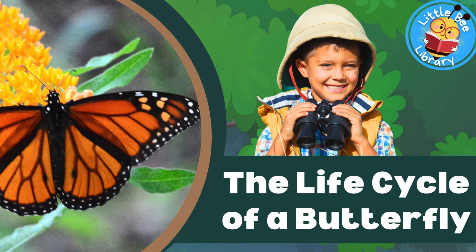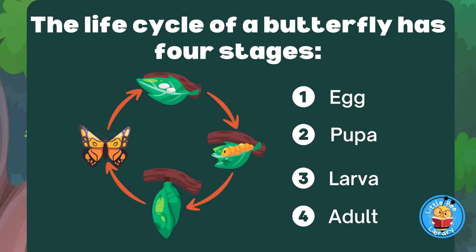The Life Cycle of a Butterfly. The Life Cycle of a Butterfly has four stages: Egg, Pupa, Larva, and Adult.